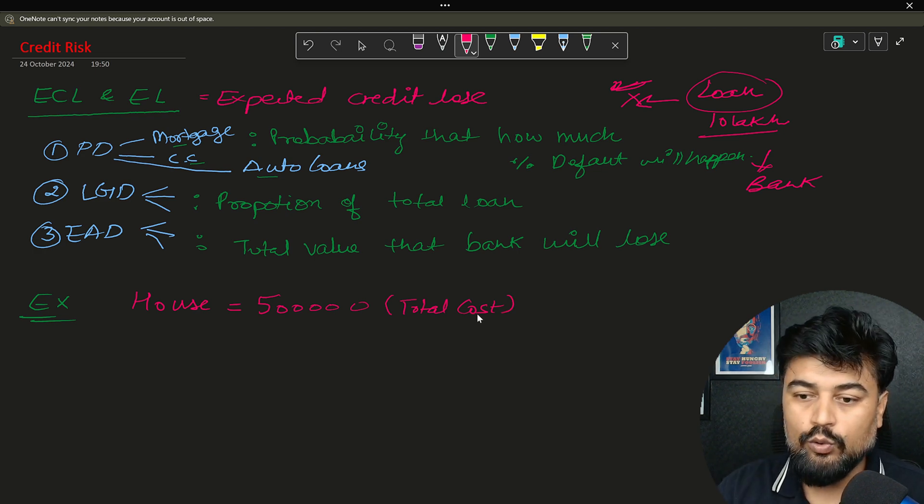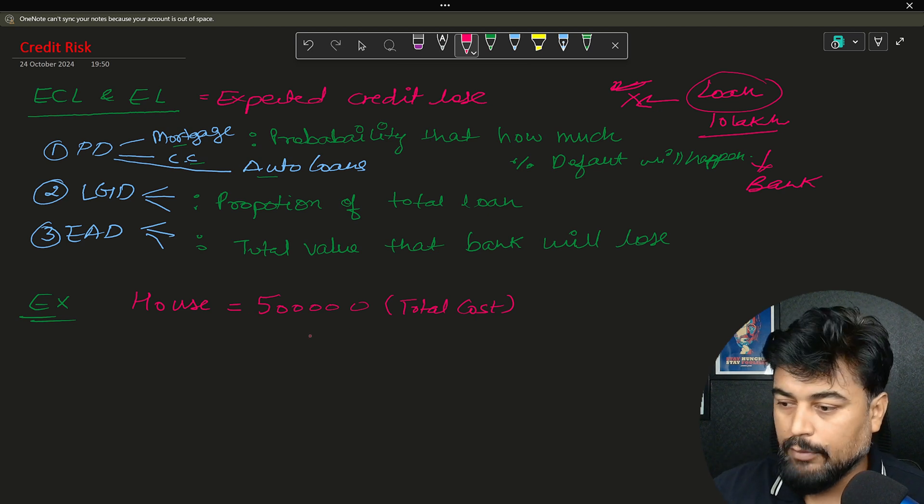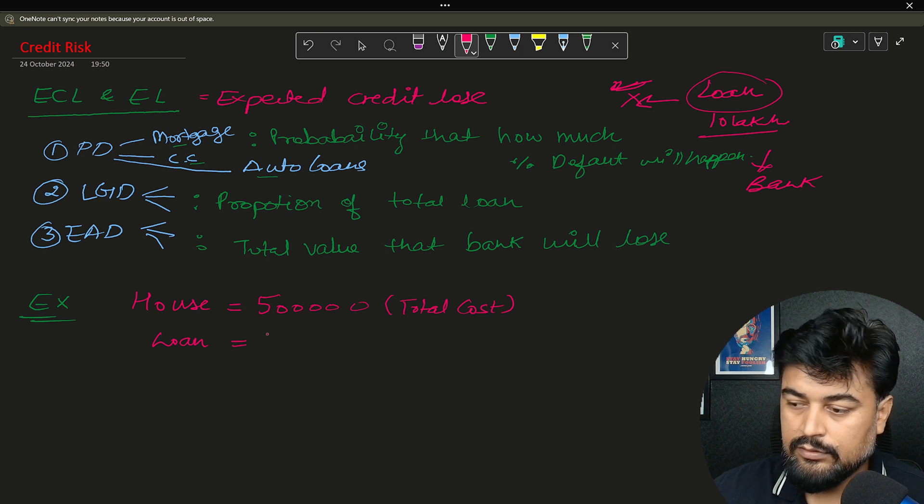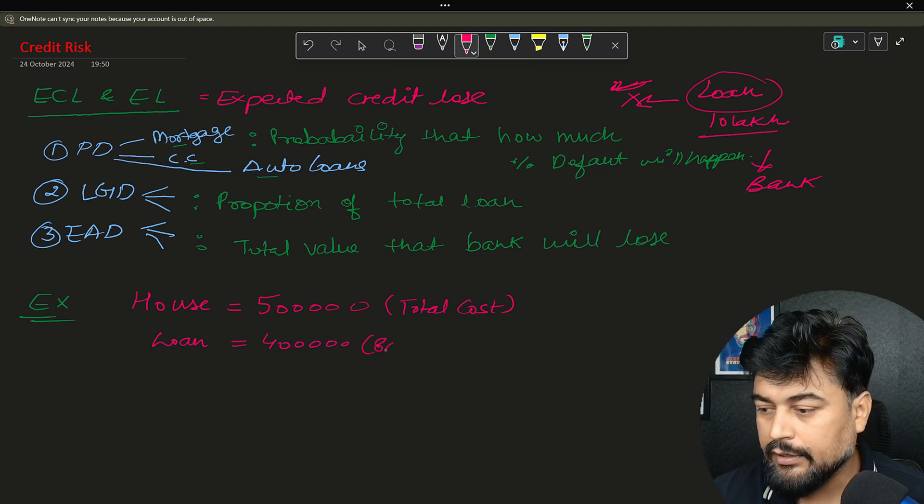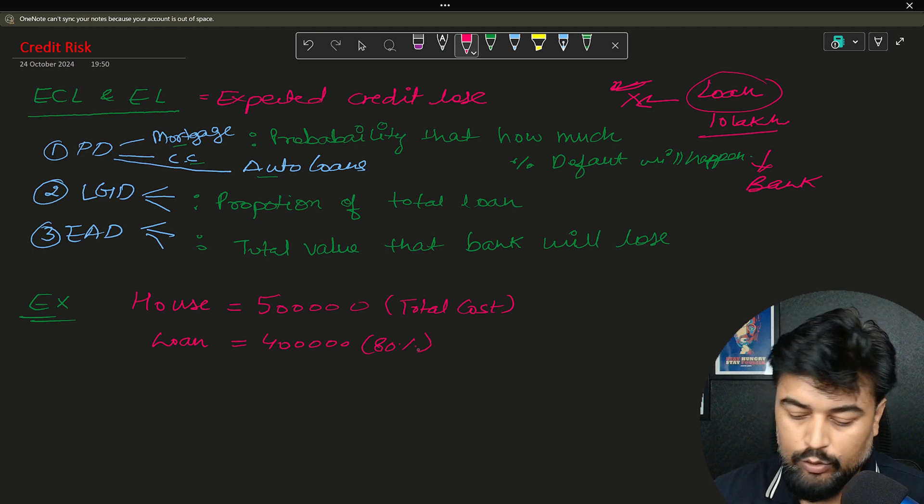He applied for the loan of 5 lakh rupees, but bank is saying that we will only offer you 80% of the loan amount. So let's say the loan amount is 4 lakh, which bank is saying this is the maximum loan you can get. So I will make 80% loan here.